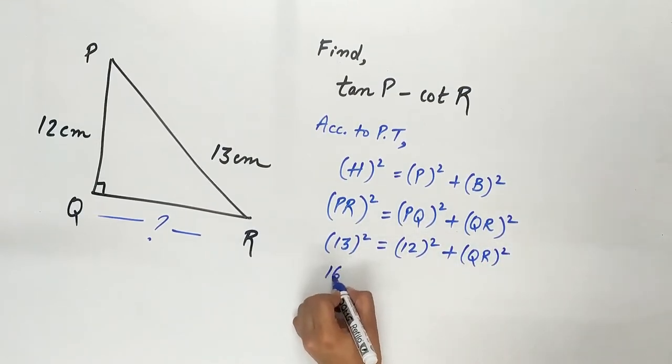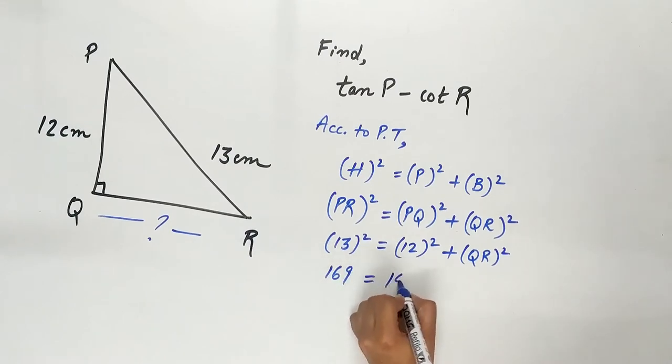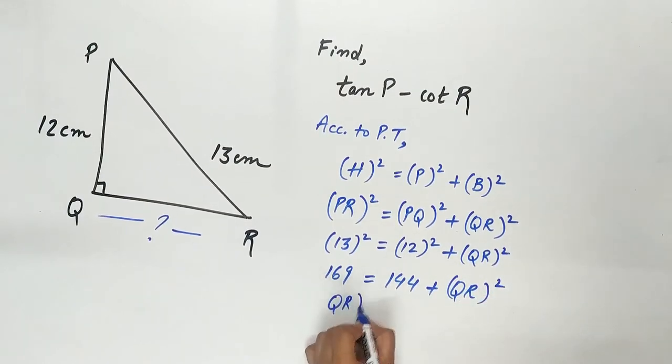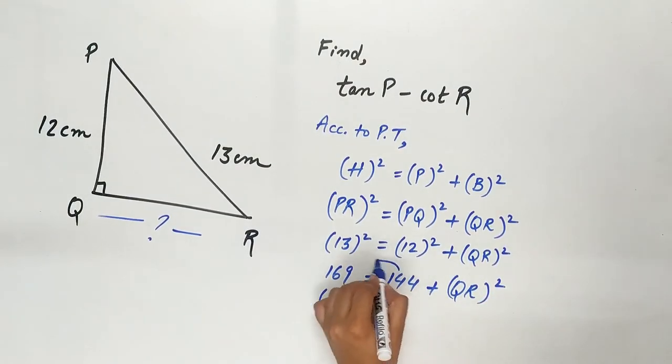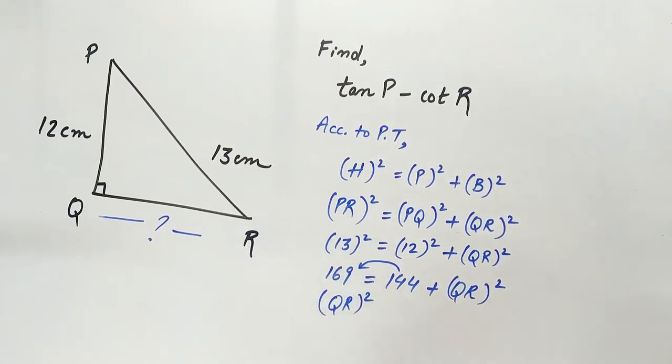13 squared is 169, 12 squared is 144 plus QR squared. So QR squared is, transpose 144 to left side, 169 minus 144 which equals 25.